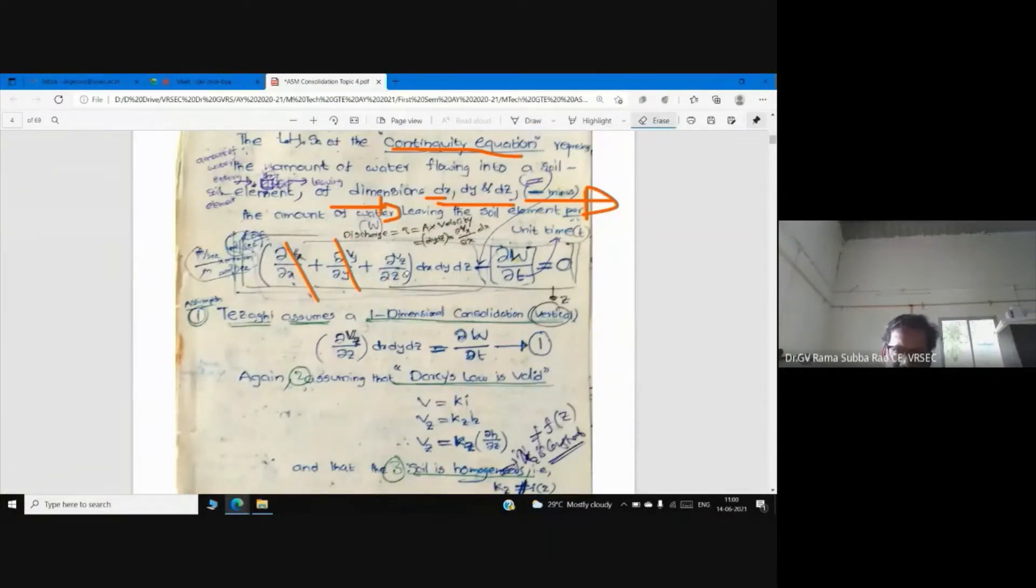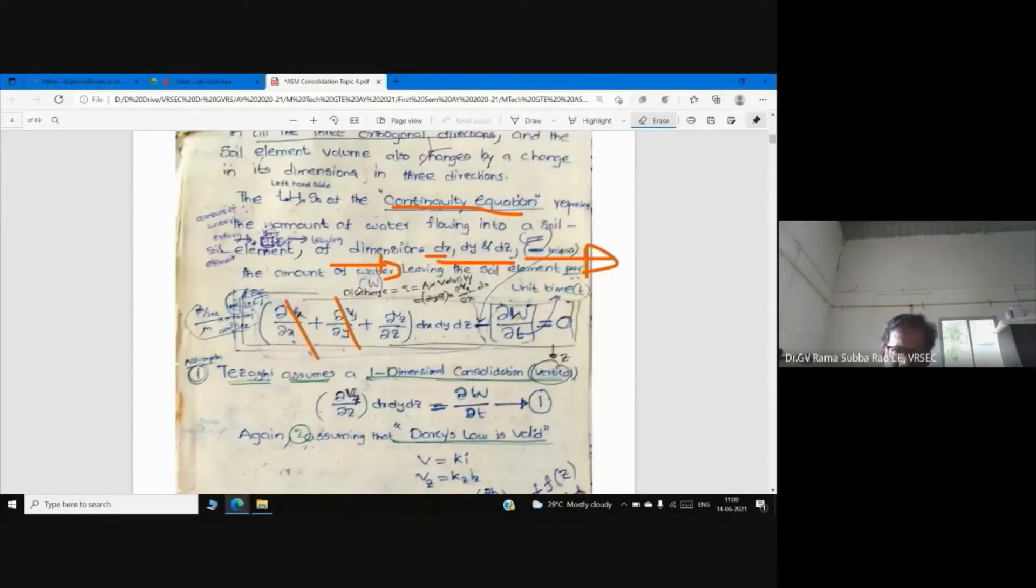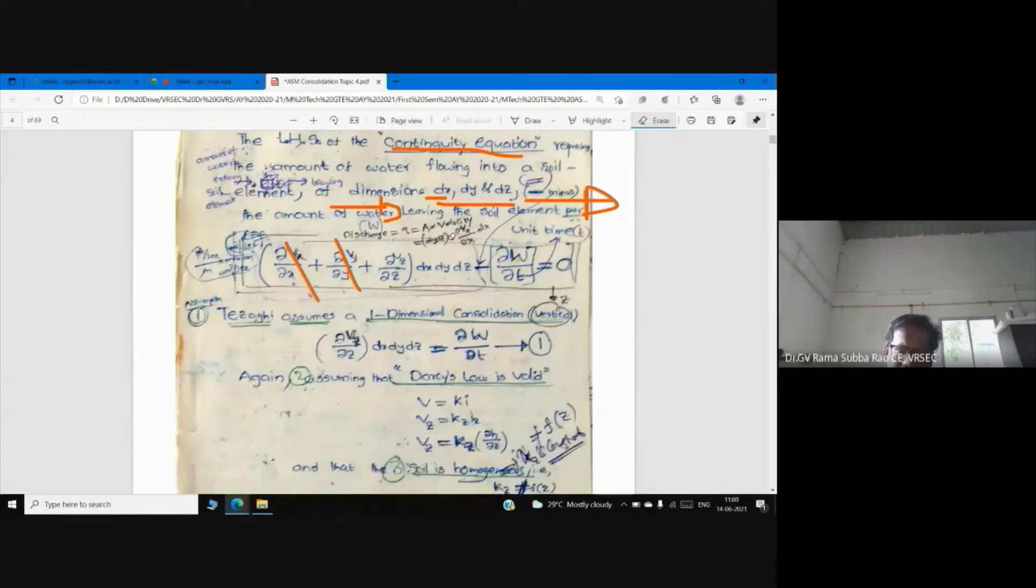The discharge, the rate of flow, is area into velocity. What is the area? dy into dz. What is velocity? dVx/dx times dx. So now you can see here, I am telling you about the velocity in vertical direction: dVz/dz times dx times dy times dz is equal to dw/dt, which equals zero.